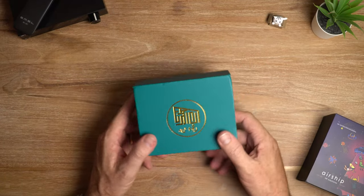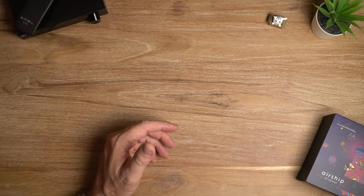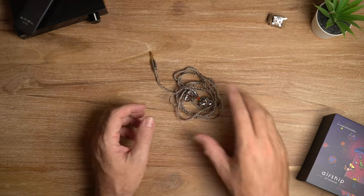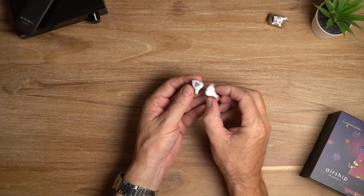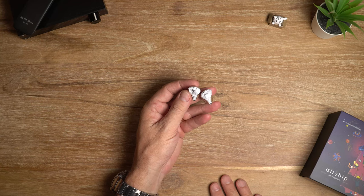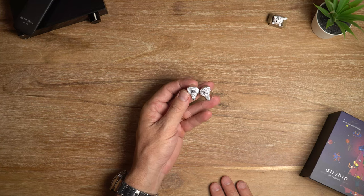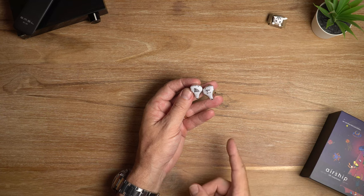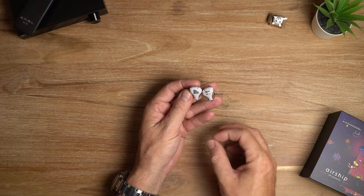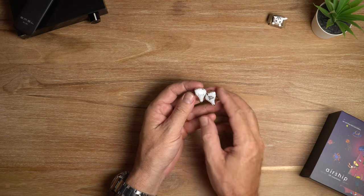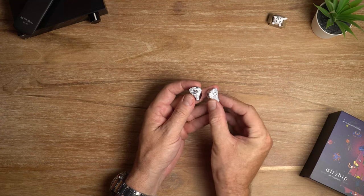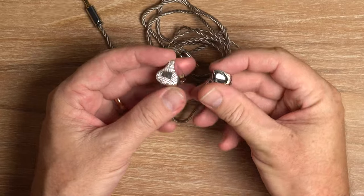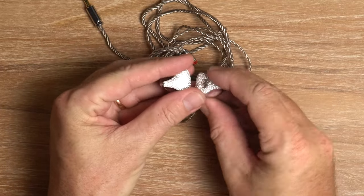I was not expecting in the least this. The Hartfield Deer retails for $169 and it has a single 6.8 millimeter dynamic driver. It also features brass coated titanium shells. Feast your eyes on these babies because oh boy.